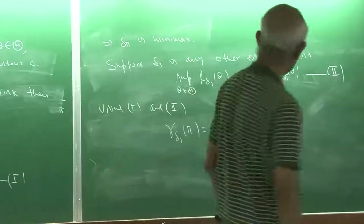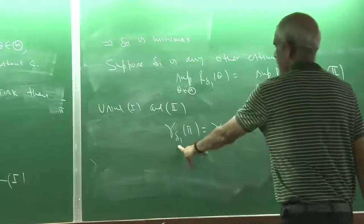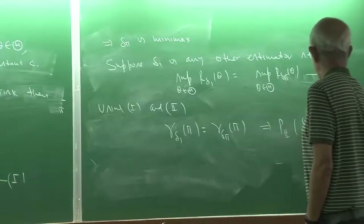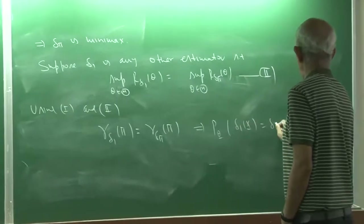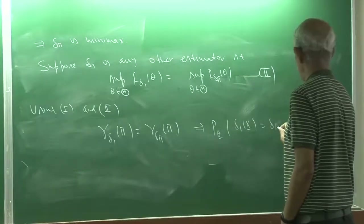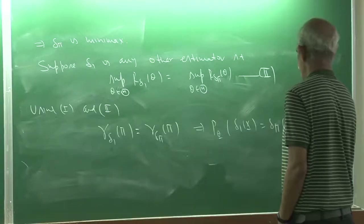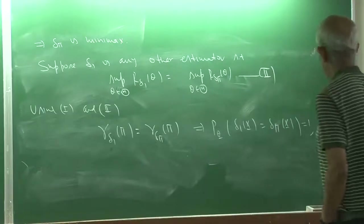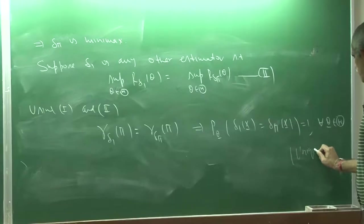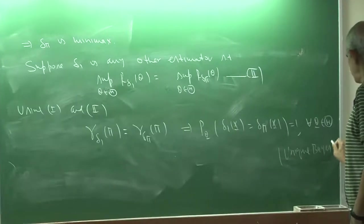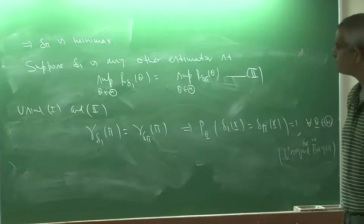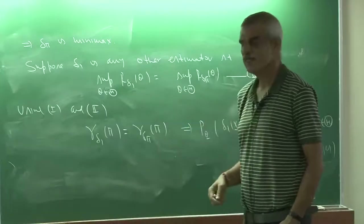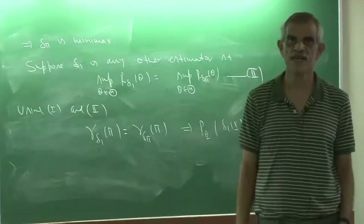This conclusion follows from the fact that delta_pi is a unique Bayes estimator. And that is exactly what we needed to prove: if there is another estimator with the same maximum risk, then that estimator must be the same as delta_pi with probability 1. So delta_pi is the unique Minimax estimator.